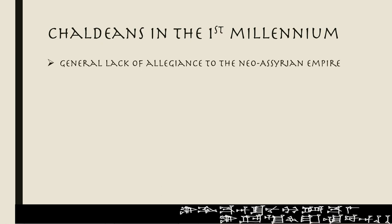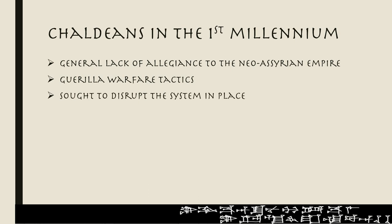There was a general lack of allegiance among the Chaldeans to the Neo-Assyrian Empire, and this led to guerrilla warfare tactics. Being from the southern area, they could recede into regions that were difficult to get to, coming out to attack caravans and disrupt established processes with the Neo-Assyrian Empire. It was very difficult for the Neo-Assyrian kings to control them — they were a nightmare for those kings.